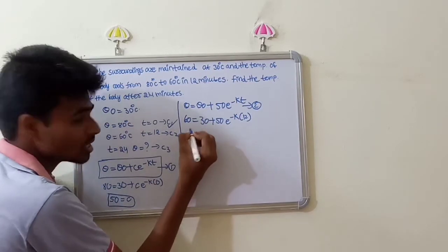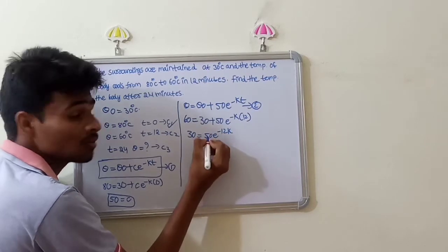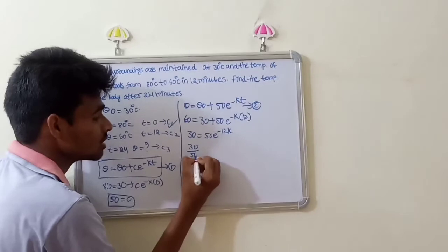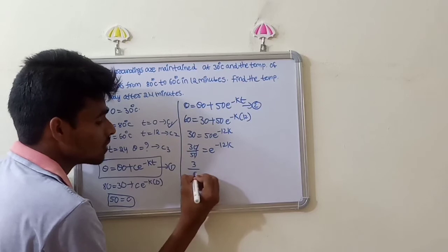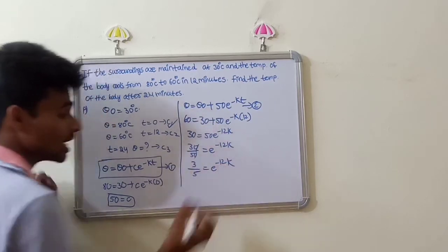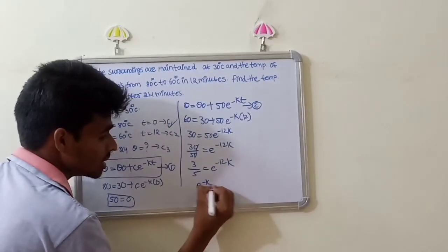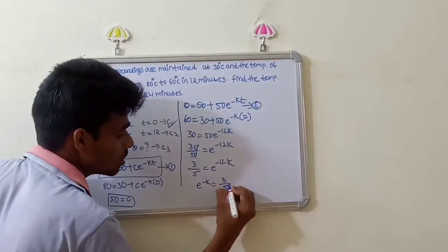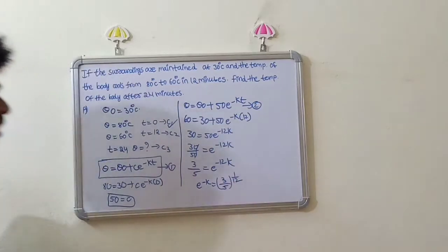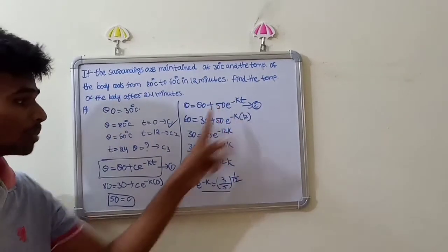Applying Case 2 at T = 12 minutes, theta = 60: 60 = 30 + 50 e power minus 12k. So 30 = 50 e power minus 12k, giving e power minus 12k = 30/50 = 3/5. Therefore e power minus k = (3/5) whole power 1 by 12.